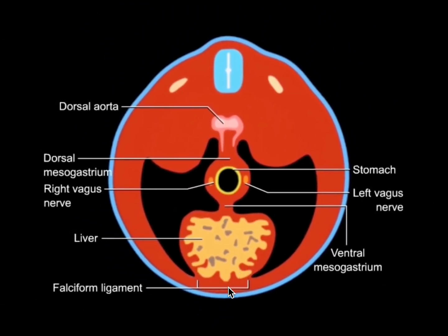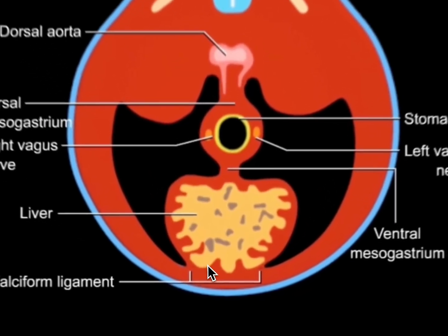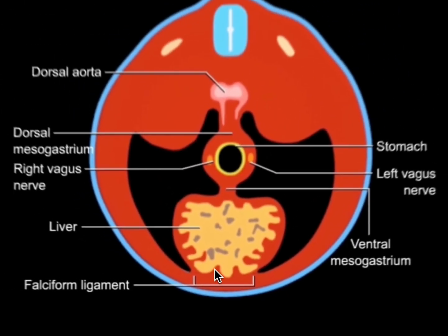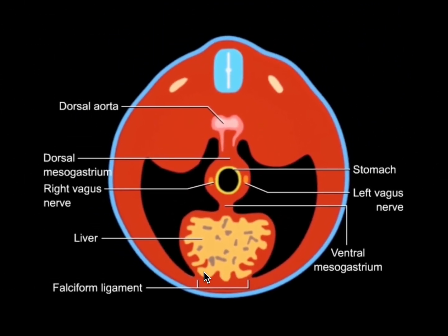The liver will develop in the ventral mesentery and is attached to the ventral abdominal wall by the falciform ligament. The pancreas and the spleen will form in the dorsal mesogastrium and they'll make an appearance shortly.